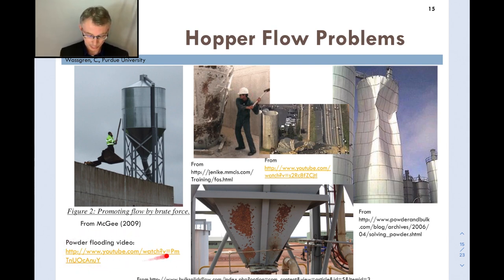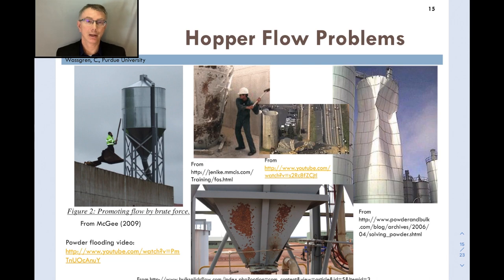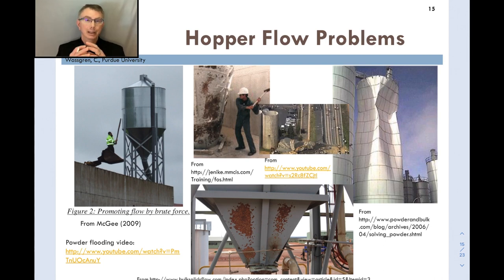Powder flooding is another problem — a video link is provided to show it in action. It occurs when material that was stuck in a funnel flow pattern on the side of a hopper suddenly breaks loose and discharges all at once. As it suddenly discharges, it becomes aerated — air gets entrained in the gaps — and the material suddenly flows like a fluid in a completely uncontrolled fashion, spilling everywhere and requiring the process to be shut down for cleanup.